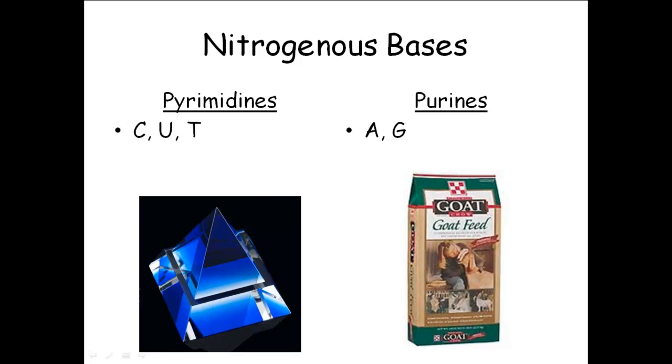You get cut on a pyramid. Purines, A-G, Ag, agriculture, goat chow, Ag agriculture.